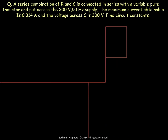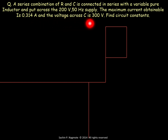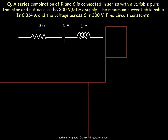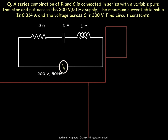The problem statement: a series combination of R and C is connected in series with a variable pure inductor and put across a 200 volt, 50 hertz supply. The maximum current obtainable is 0.314 ampere and the voltage across C is 300 volt. Find the circuit constants. The supply voltage is 200 volts and the frequency is 50 hertz.